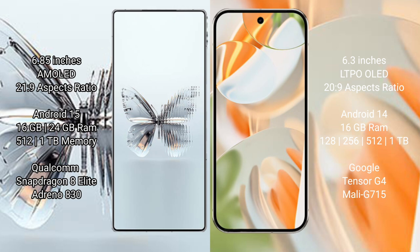Google Pixel 9 Pro offers 8GB and 16GB RAM with 128GB, 256GB, 512GB, and 1TB internal storage, powered by a Google Tensor G4 processor with GPU Mali-G715.